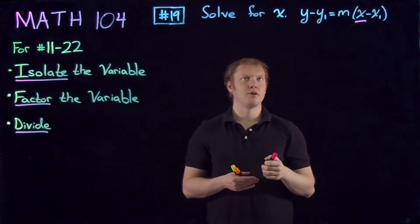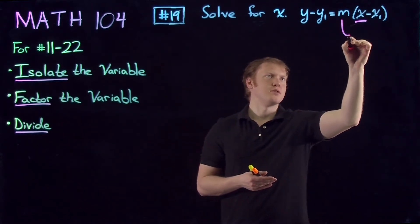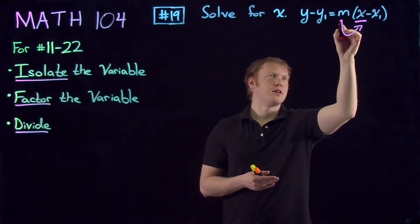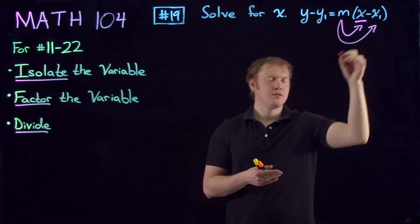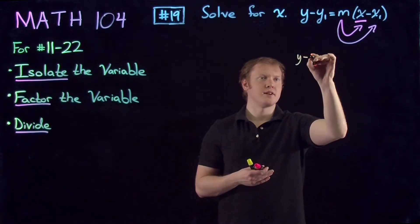We will start off by isolating the variable. We will note first that we need to distribute m here, which will give us the following for the right-hand side.